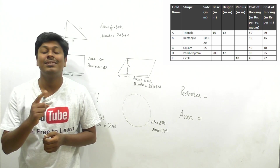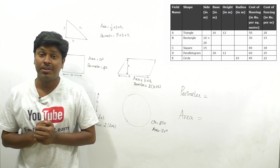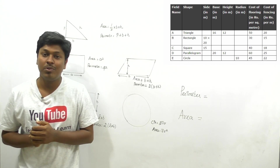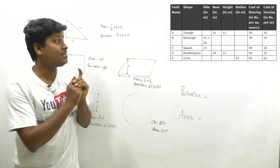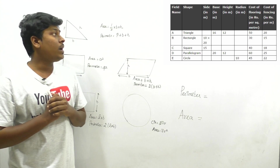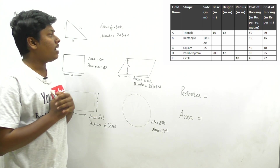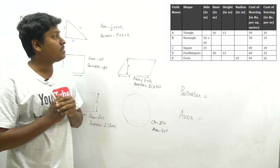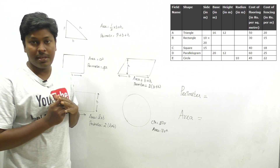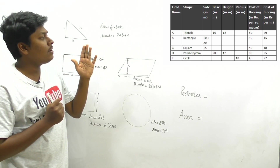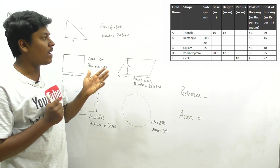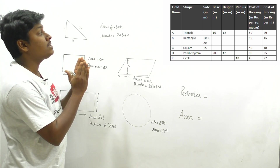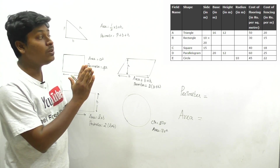Let me move on to the first data interpretation question mainly concentrated for the upcoming SBI PO 2016. Here is the chart with fields A, B, C, D, E. Five fields are given, and the shape of each field is also given — triangle, rectangle, square, parallelogram, and circle.